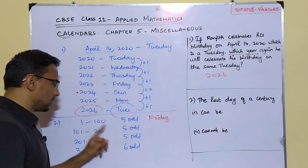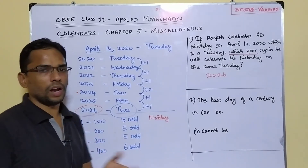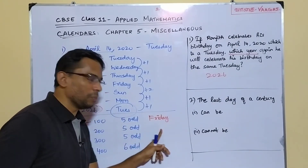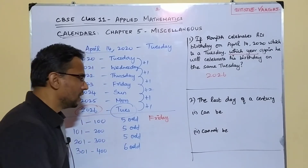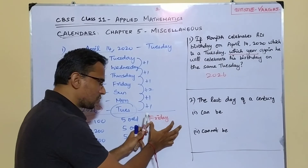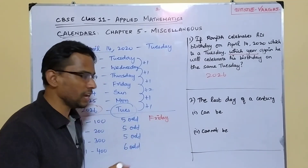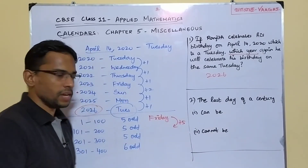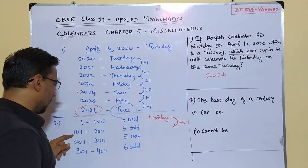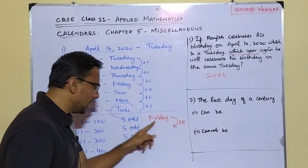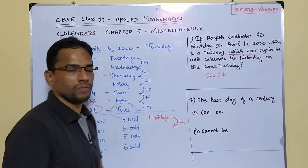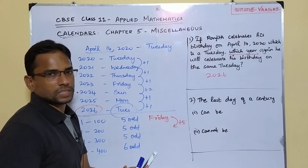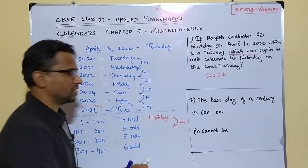For the second century, we have another 5 odd days. But we don't restart from zero — we continue from Friday. So Friday plus 5 more days: Saturday, Sunday, Monday, Tuesday, Wednesday. The last day of the second century is Wednesday. For the third century, again 5 odd days from Wednesday: Thursday, Friday, Saturday, Sunday, Monday. The last day of the third century is Monday.